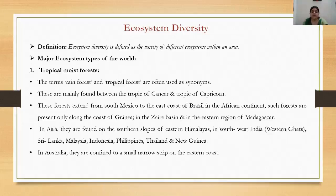The next term is ecosystem diversity. An ecosystem is defined as the variety of different ecosystems within an area. There are different ecosystems present on the planet, and the variation in these ecosystems is called ecosystem diversity. There are a few major types of ecosystems we will study one by one.